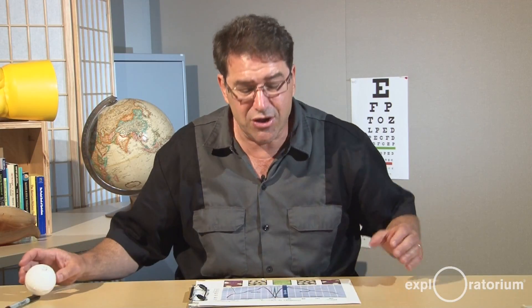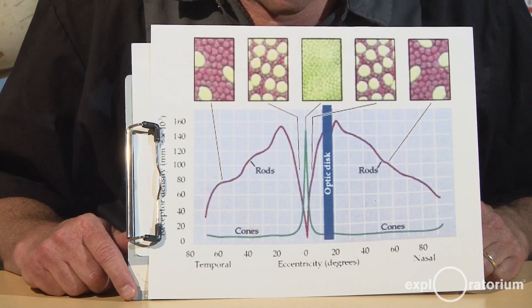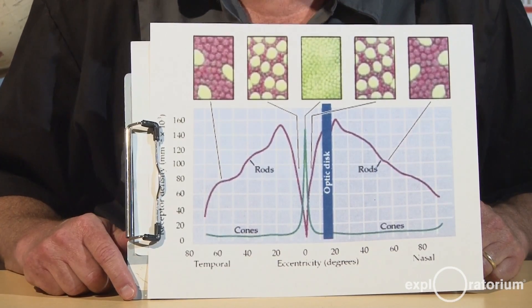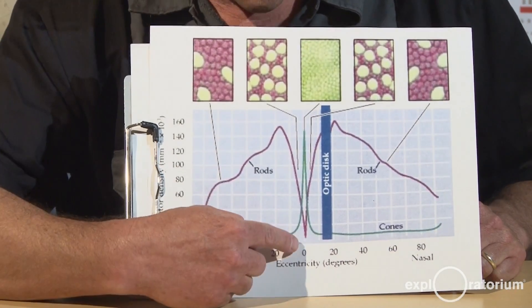Turns out those sensors are not evenly distributed on the back of your eye. Scientists have actually cut into human eyes and counted the density of those rods and cones. This graph might look complicated, but it's a diagram of the density of rods and cones on the back of your eye.